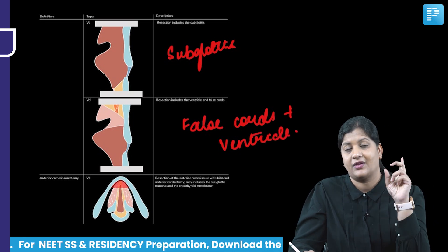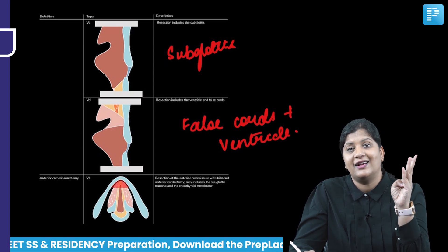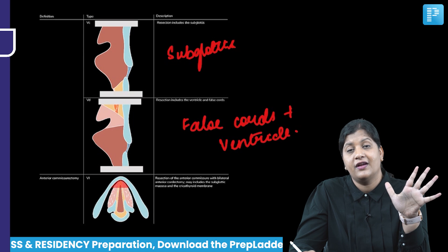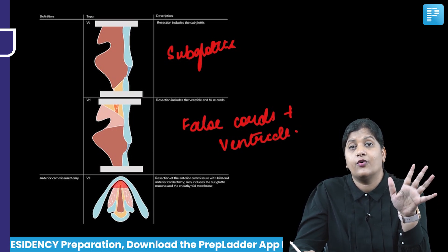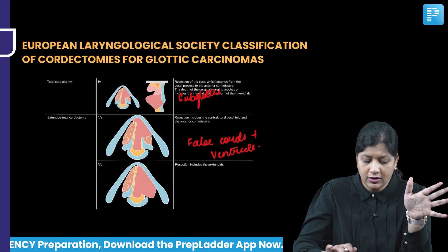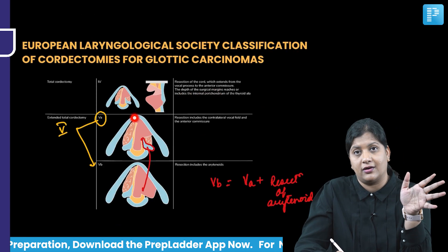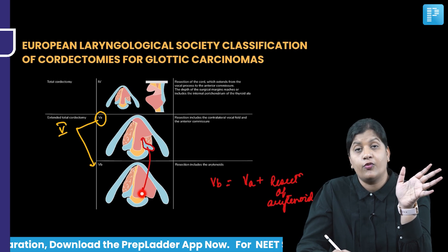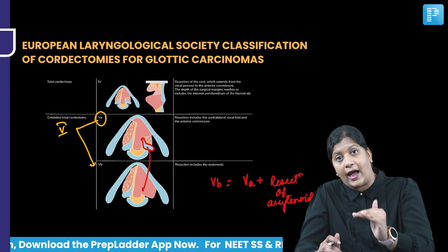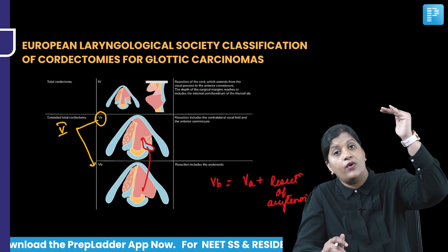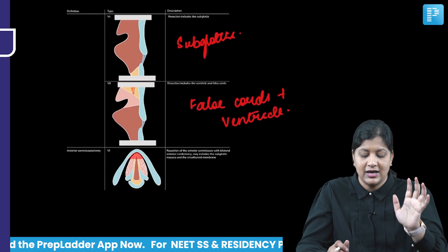To summarize: type 1 — only epithelium; type 2 — up to the ligament; type 3 — till the muscle; type 4 — till the thyroid ala; type 5 — extended forms. 5a goes up to the anterior commissure and removes the contralateral one third. 5b is the same but also resects the arytenoid. 5c goes down and removes the subglottis. 5d goes above and removes the false cords and the ventricle of the larynx.